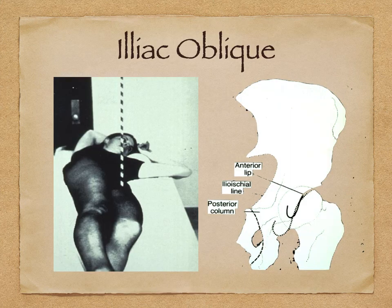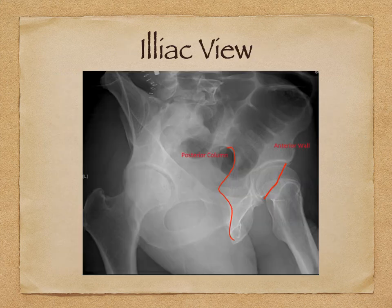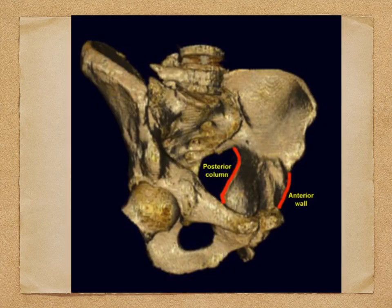On the iliac oblique view, you can see the anterior lip, the ilioischial line representing the posterior column, and the posterior rim as well. It is mainly used to see the posterior column and the anterior wall. Similarly on 3D reconstruction, you can visualize the posterior column and the anterior wall very clearly.